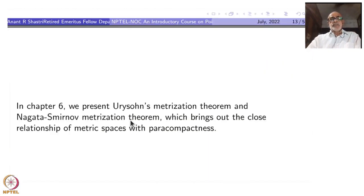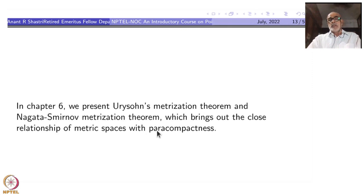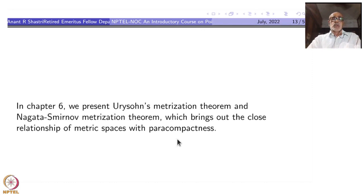In Chapter 6, we present Urysohn's Metrization Theorem and the Nagata-Smirnov Metrization Theorem, two of the important ones — there are many other versions we cannot cover. These bring out the close relationship between metric spaces and paracompactness, especially in the Nagata-Smirnov theorem.